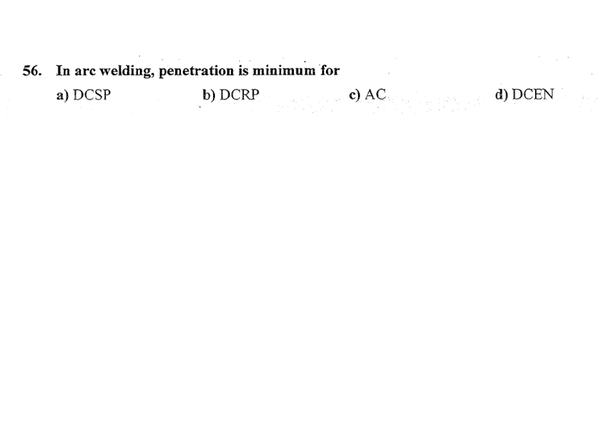Question is in arc welding penetration is minimum for options are DCSP, DCRP, AC, DCEN. DCSP means direct current straight polarity, DCRP means direct current reverse polarity, AC is alternating current.